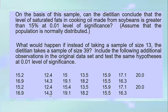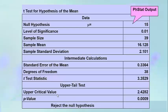What would happen if instead of a sample of size 13, the dietitian takes a sample of 39? Including additional observations in the original dataset and testing the same hypothesis at the 0.01 level of significance, we have 39 total observations. The results were analyzed using a statistical program (PHStat).